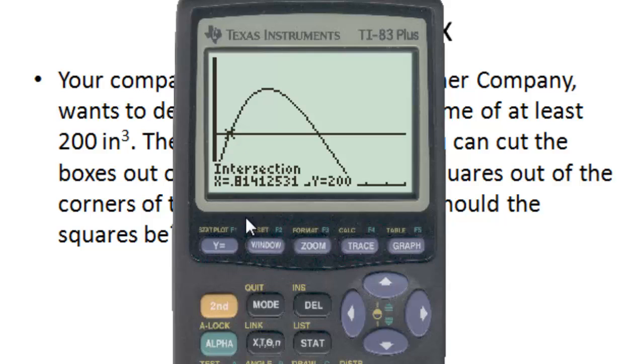So now we have our solution there, that in order to have the volume of at least 200 cubic centimeters, we need to have our x in the interval between 0.81 and 5.48.